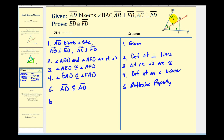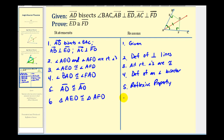So now we know that these two triangles are congruent. Being careful to state them in corresponding order, triangle AED is congruent to triangle AFD. The reason for this is Angle-Angle-Side congruence.